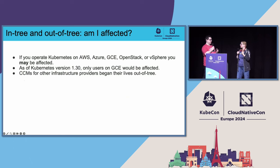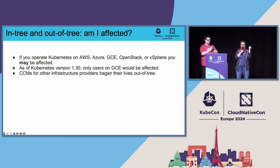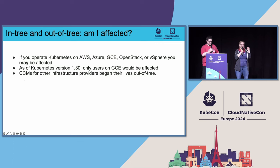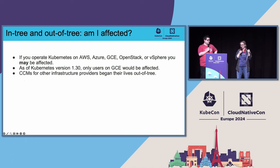How do you know if you're affected? If you are operating Kubernetes on AWS, Azure, GCE, OpenStack, or vSphere, you could be affected — those are the ones that had in-tree code. Everyone else, like Equinix and others, are definitely not affected because they never had in-tree. As of the next release of Kubernetes, only GCE would still be affected because everyone else has removed their in-tree code. An eye chart will show you exactly when everything happened.